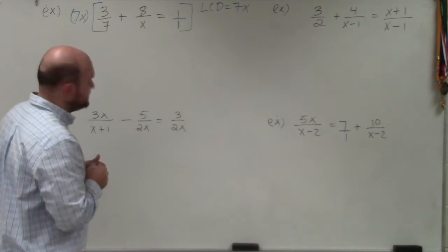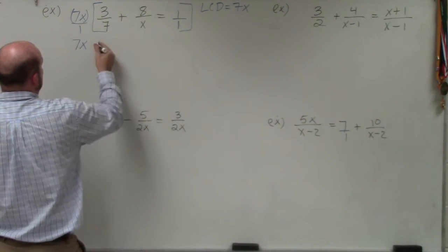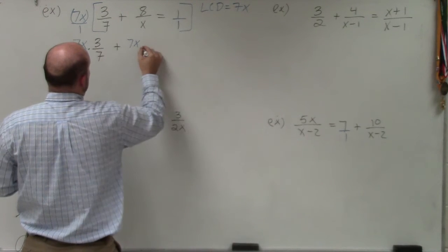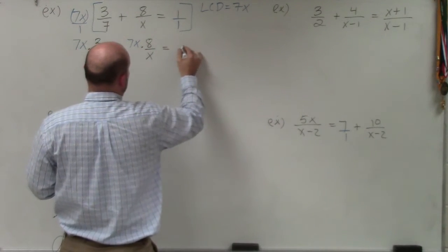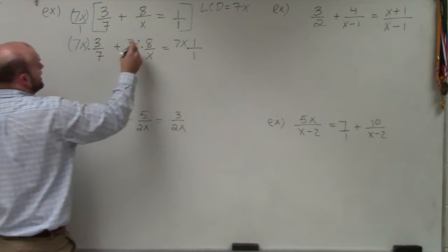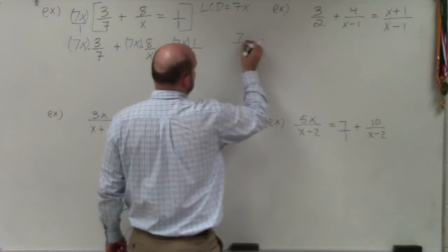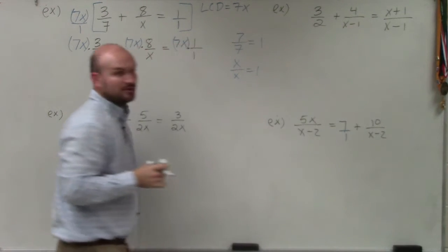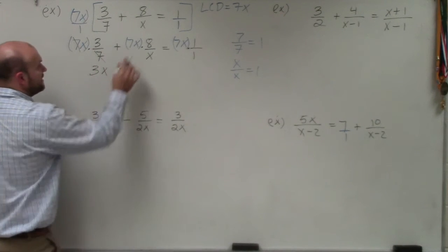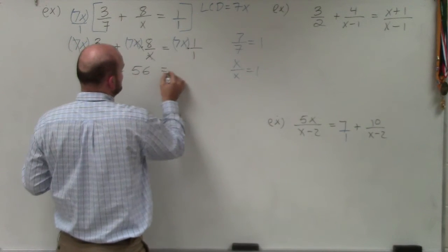So when I multiply each one of these, it's going to look like 7x times 3 over 7, plus 7x times 8 over x, equals 7x times 1 over 1. Now, using the division property — 7 divided by 7 is 1, and x divided by x is 1 — my 7s divide out, leaving me with 3x. My x's divide out, leaving me with 7 times 8, which is 56. And 7x times 1 over 1 is just 7x.